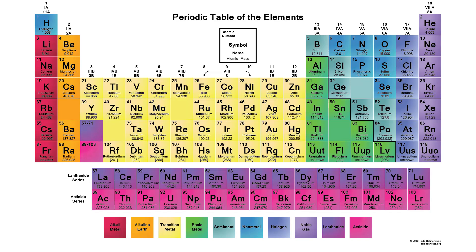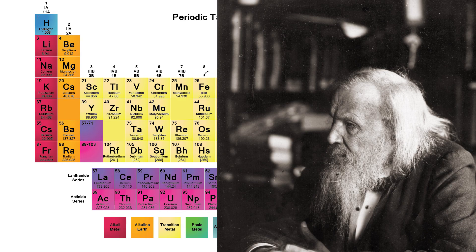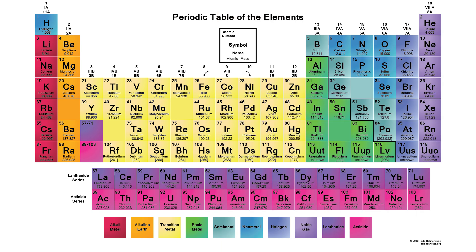The periodic table was constructed by Dmitri Mendeleev, a Russian chemist and inventor. In 1869, he lined up all the elements in order of increasing atomic mass, and then broke them into rows, so that elements with similar properties were arranged in columns.